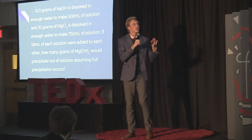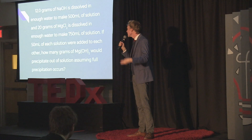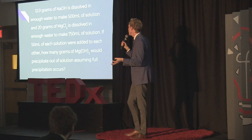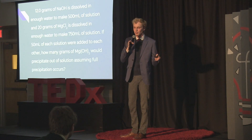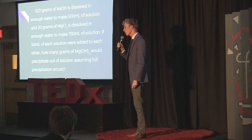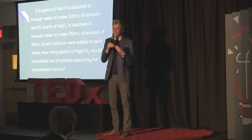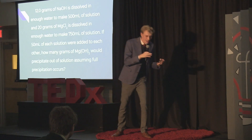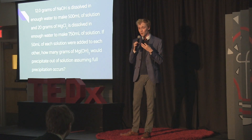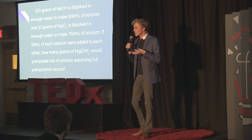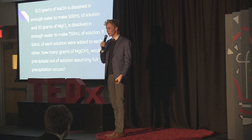We came to the end of the semester and were approached with a problem like this: 12 grams of sodium hydroxide is dissolved in enough water to make half a liter of solution, and 20 grams of magnesium chloride are dissolved in 750 milliliters. If I combine 50 milliliters of each of these, how many grams of magnesium hydroxide would precipitate out of solution? My student knew she'd have to convert those masses to concentrations and somehow get to a mass of the final product, but she didn't really know where to start.